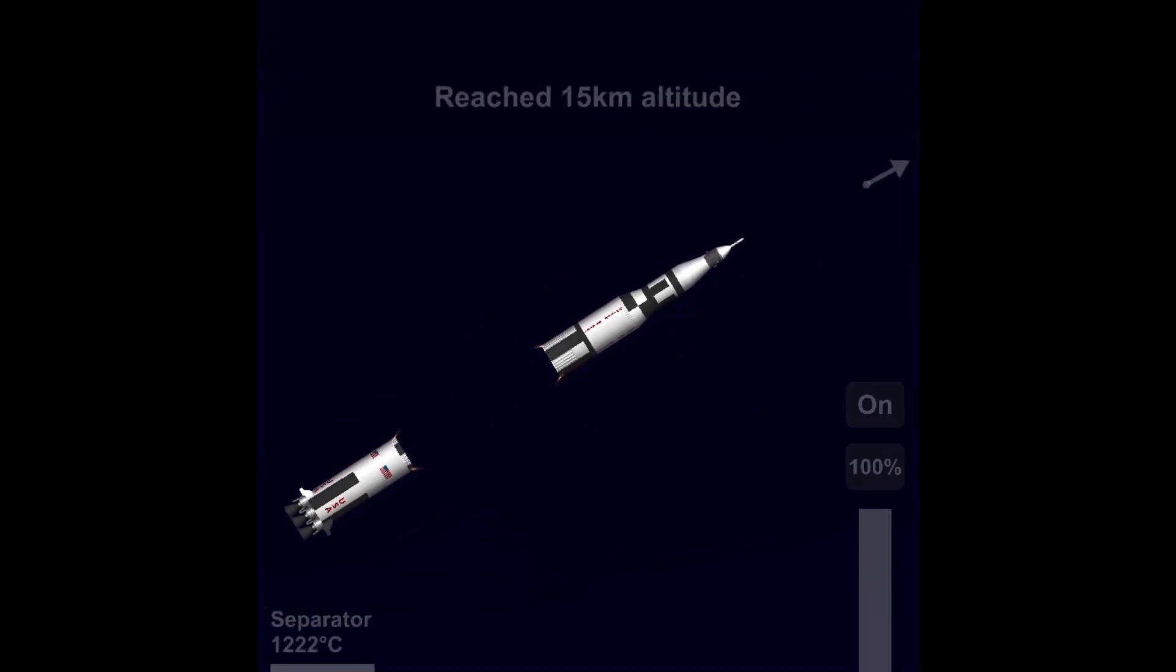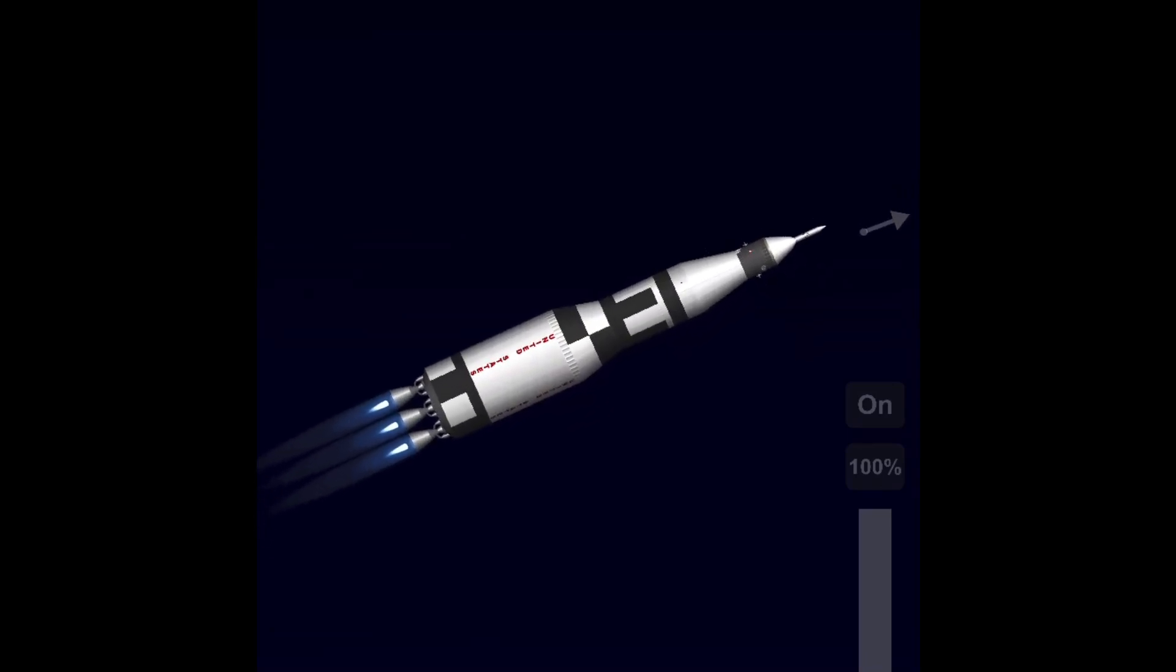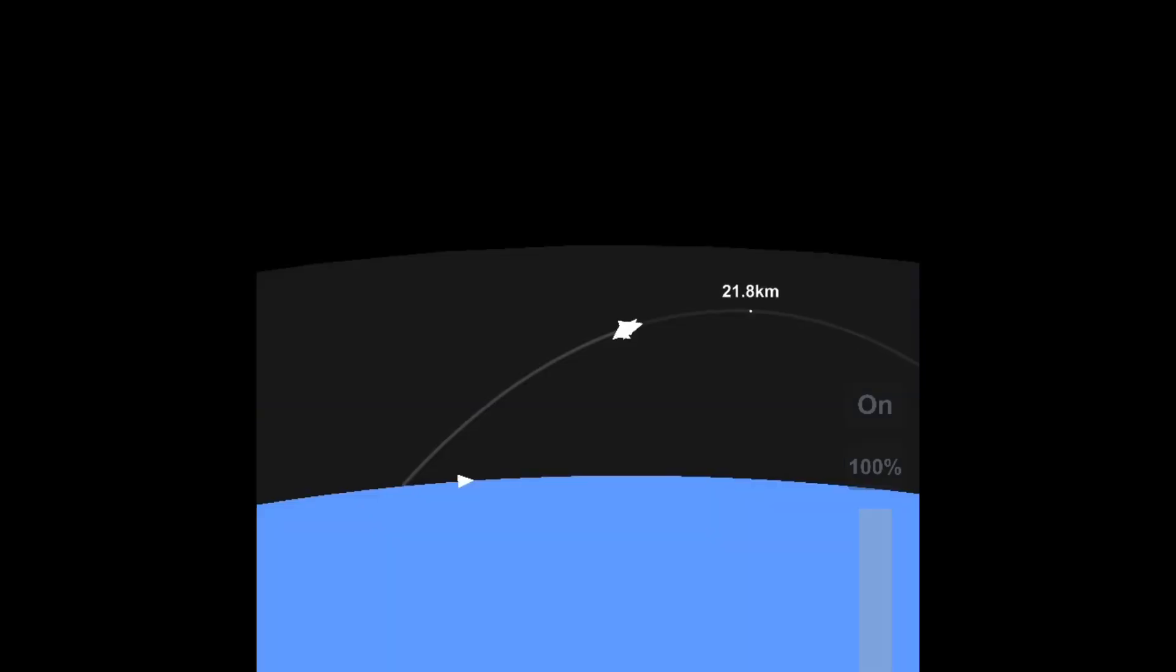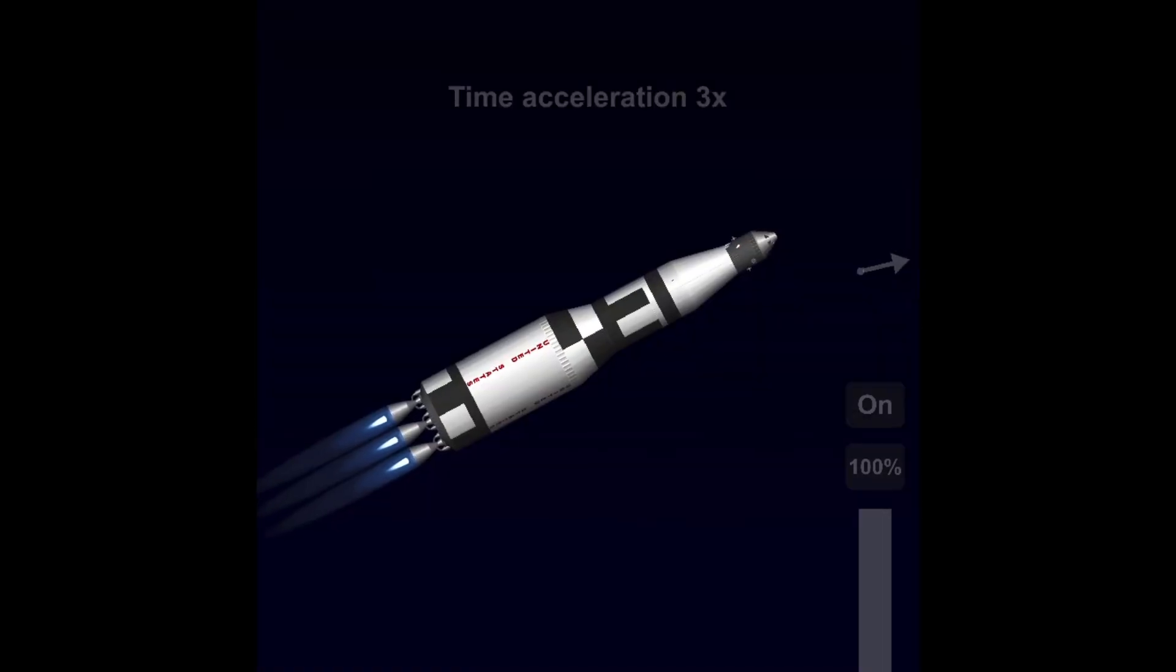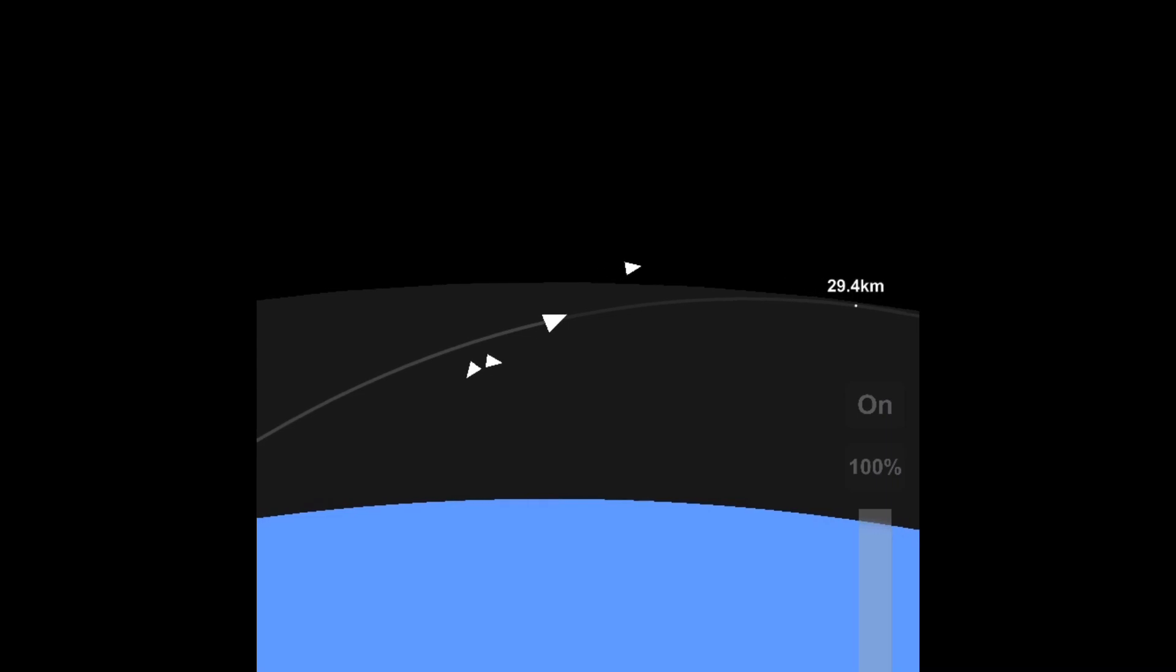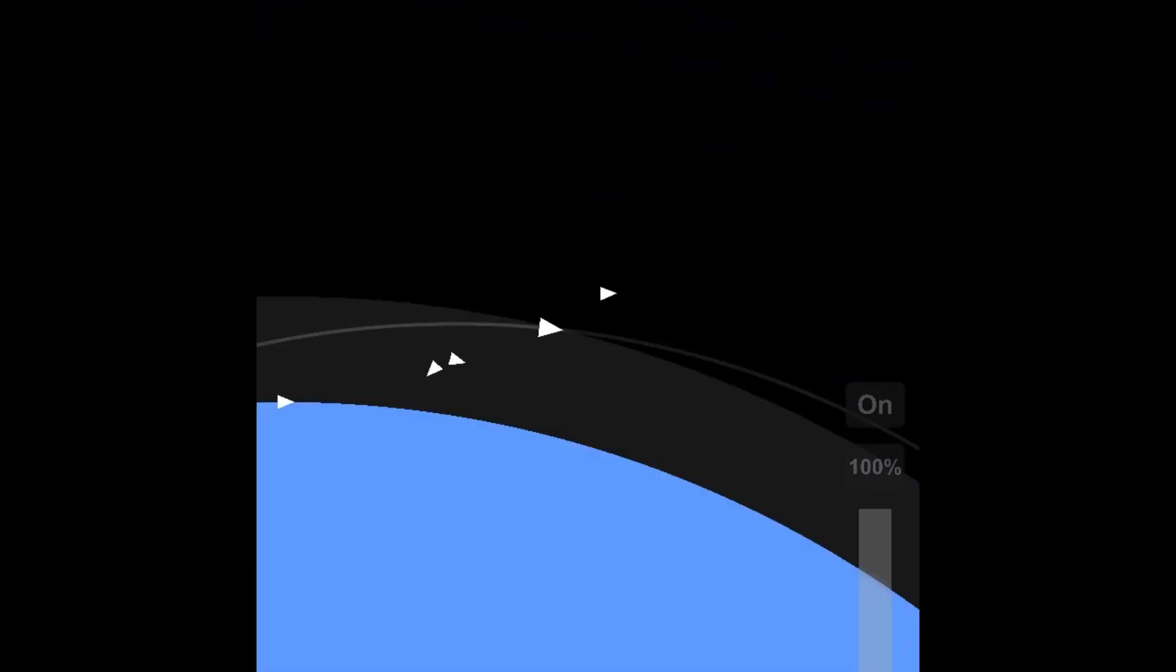So right now, we're performing stage separation, and then we're about to jettison the skirt. There it goes. And then ignite the three J2 engines, jettison the escape tower. And then I noticed that my trajectory was a little low, so I began to point radial out a little bit. And there we go, I fixed it.